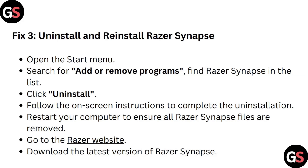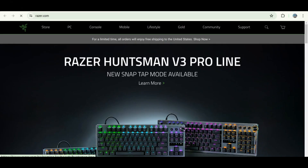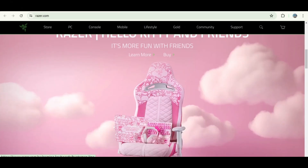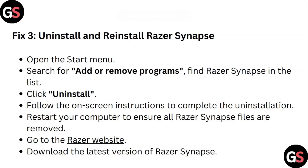Step 3: Uninstall and reinstall Razer Synapse. Open the Start menu and search for 'Add or Remove Programs.' Find Razer Synapse in the list and click Uninstall. Follow the on-screen instructions to complete the uninstallation. Restart your computer to ensure all Razer Synapse files are removed. Then go to the Razer website and download the latest version of Razer Synapse.